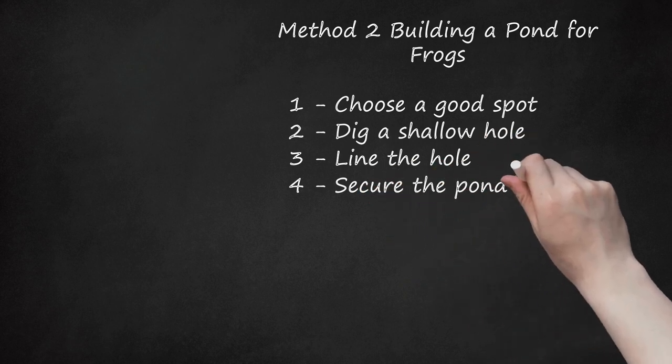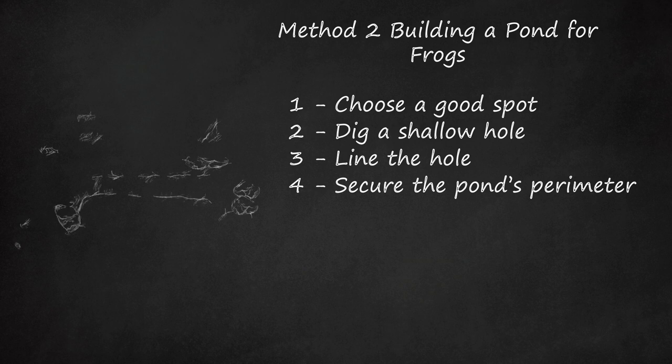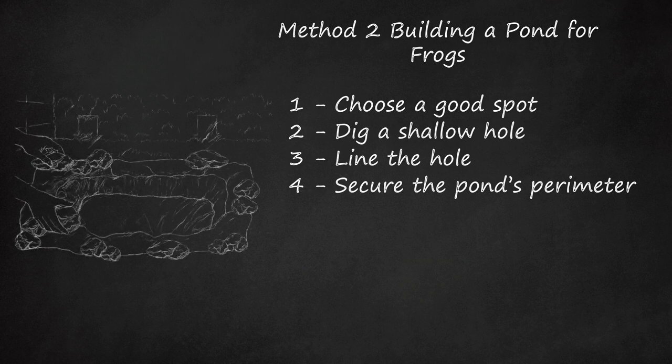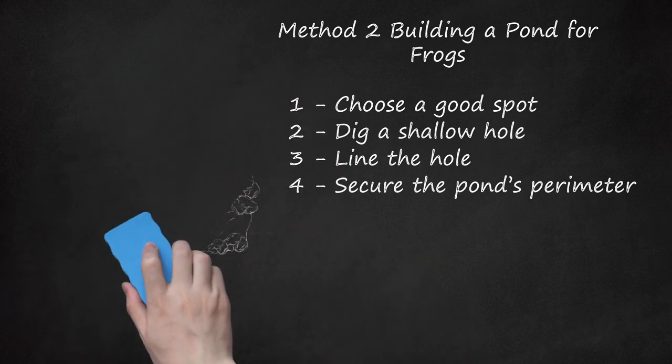4. Secure the pond's perimeter. Weigh down the plastic sheet around the edges of your pond with closely packed rocks, and or ring it with the pieces of turf you kept from digging the hole where your pond would go. Either way, make sure your perimeter is heavy and big enough to keep the liner in place. Once you've secured the pond's perimeter, you can cut away any excess liner.